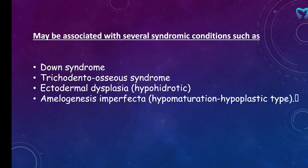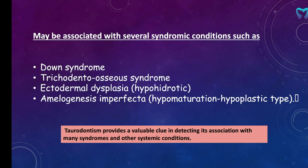Taurodontism may be associated with many conditions such as Down syndrome (trisomy of chromosome 21), tricho-dento-osseous syndrome — where tricho means hair, dento means teeth, and osseous means bone, so it affects all of these — ectodermal dysplasia, in which all organs derived from the ectoderm such as teeth, hair, and nails are affected, and amelogenesis imperfecta, which we will study next. Taurodontism may provide a valuable clue in detecting its association with these syndromes, so a dentist can actually be the first person to detect these syndromes in a patient.